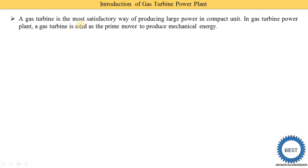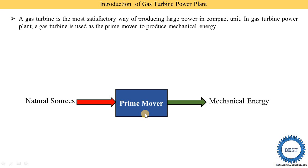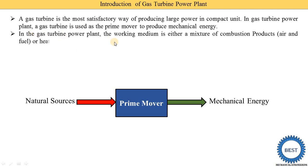In a gas turbine power plant, the gas turbine is used as the prime mover to produce mechanical energy. A prime mover is a mechanical device in which we supply natural sources as input and they are converted into mechanical energy. In a gas turbine, we supply hot air or gas and it is converted into mechanical energy. The working medium is either a mixture of combustion products — air and fuel — or heated air.